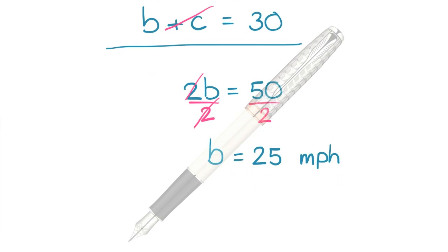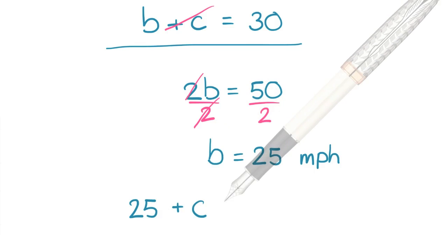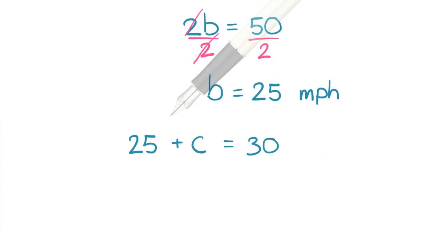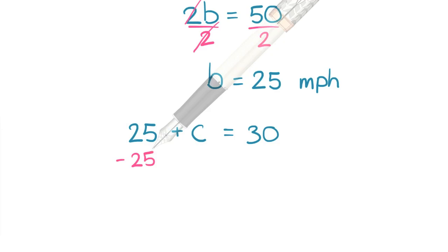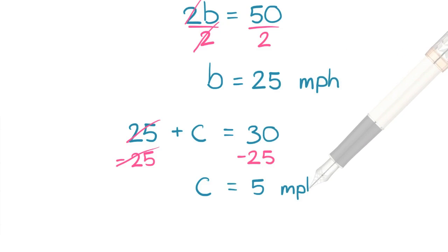And by back substituting into b plus c equals 30, we can solve for c, the speed of the current. By doing so we have 25 plus c equals 30. Subtract both sides by 25. c is left with 5, or the speed of the current, 5 miles per hour.